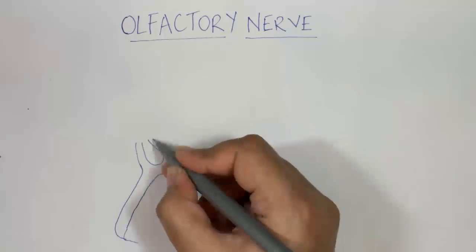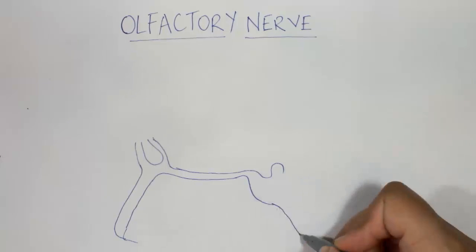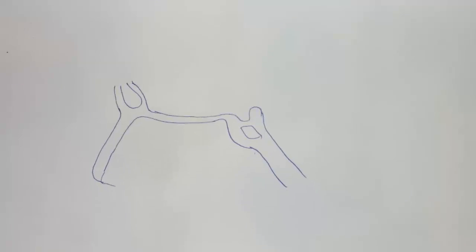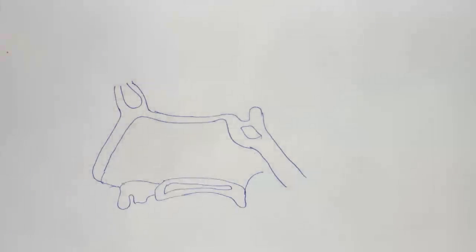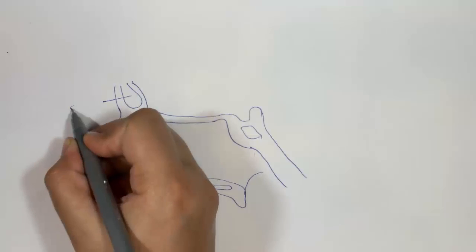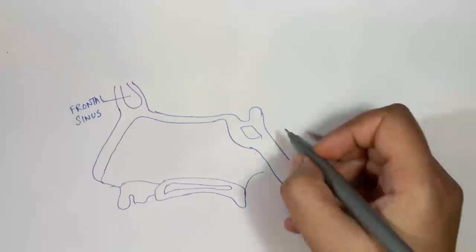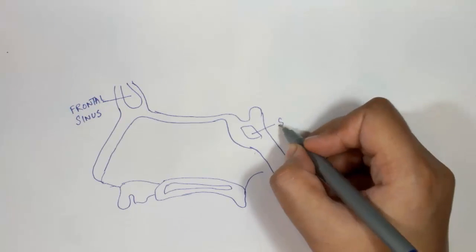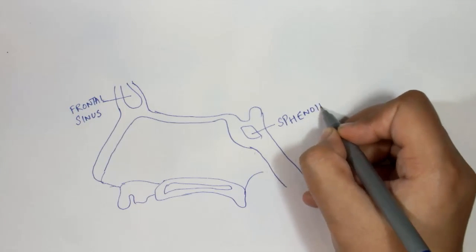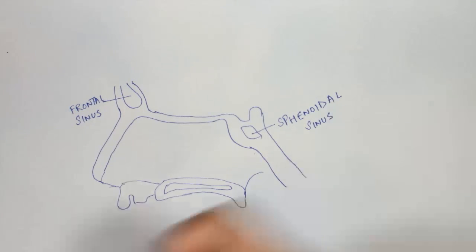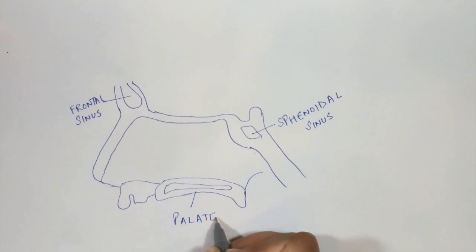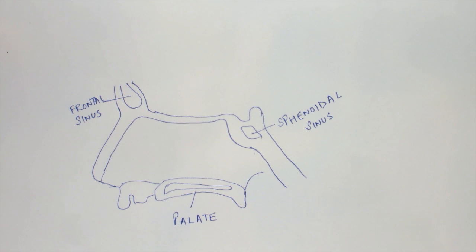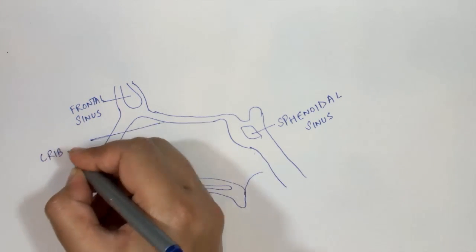This is a section of the nose which also shows the sinuses. This is the frontal sinus, this is the sphenoidal sinus, this is the palate, and above lies the cribriform plate.